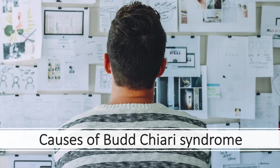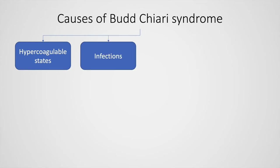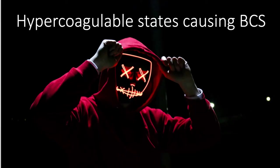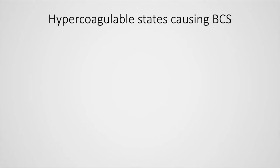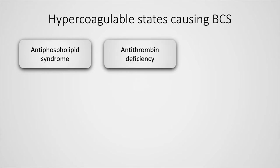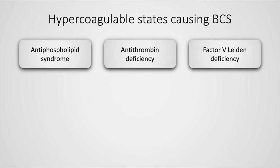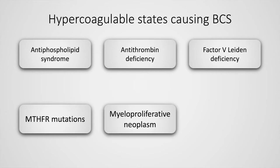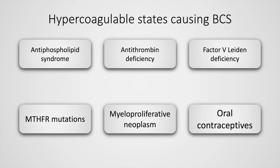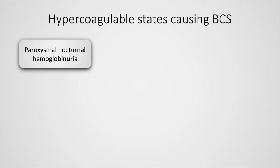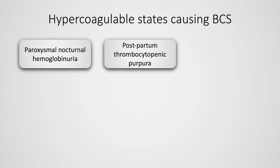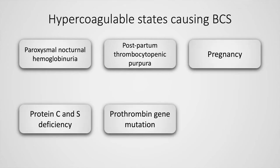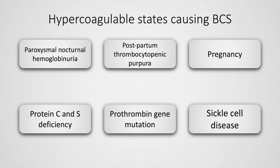The causes of Budd-Chiari syndrome include hypercoagulable states, infections, malignancies, and miscellaneous causes. The hypercoagulable states include antiphospholipid syndrome, antithrombin deficiency, factor V Leiden deficiency, methylenetetrahydrofolate reductase mutations, myeloproliferative neoplasms, oral contraceptives, paroxysmal nocturnal hemoglobinuria, postpartum thrombocytopenic purpura, pregnancy, protein C and S deficiency, prothrombin gene mutations, and sickle cell disease.